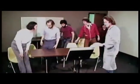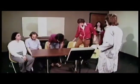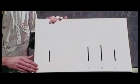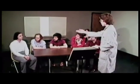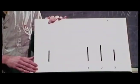The Asch experiment is one of psychology's oldest and most popular pieces of research. A volunteer is told that he's taking part in a visual perception test. What he doesn't know is that the other participants are actors, and he's the only person taking part in the real test, which is actually about group conformity.